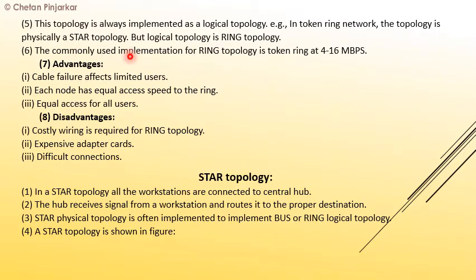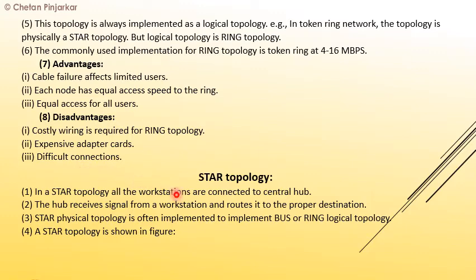Ring topology is always implemented as a logical topology. For example, in a token ring network, the physical topology is a star topology but logically it is a ring topology. The commonly used implementation speed is 4 to 16 Mbps. An advantage is that a cable failure affects only limited users and each node has equal access to the ring. Disadvantages include costly wiring, expensive adapters, and difficult connections.